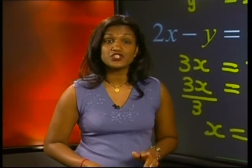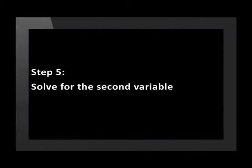We have found one of the values that satisfies our simultaneous equations. Now all that's left for us to do is solve for the remaining variable y. This is our fifth step: Solve for the second variable.